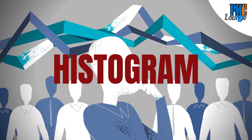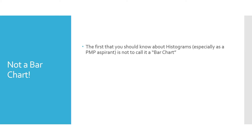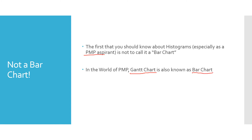Let's get started. A histogram is not a bar chart — that's the first thing you should know, especially if you are a PMP aspirant. In the world of PMP, a bar chart is also known as a Gantt chart; these two terms are used synonymously. Gantt charts are used to represent project schedules, so a Gantt chart and a bar chart are the same thing as far as PMP is concerned.